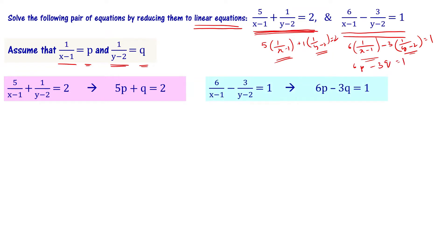Now look at these two equations — they are in variables p and q, and every variable has degree 1 only. So the highest degree is 1, meaning these are now linear equations. Understood?